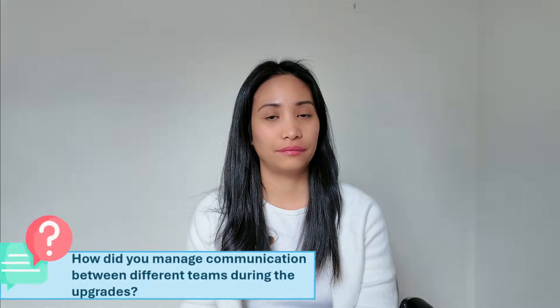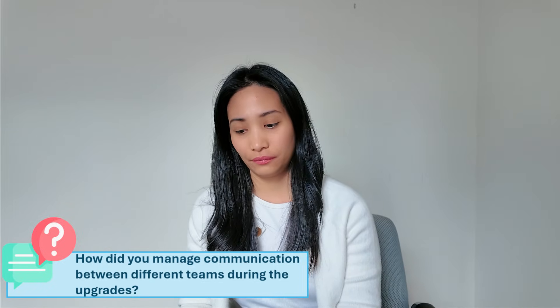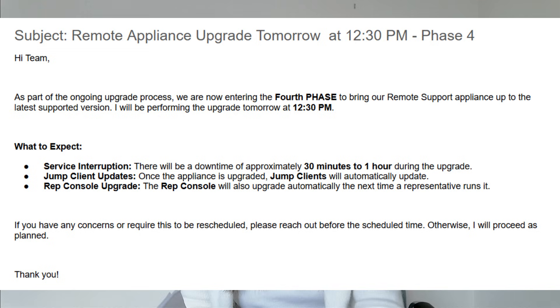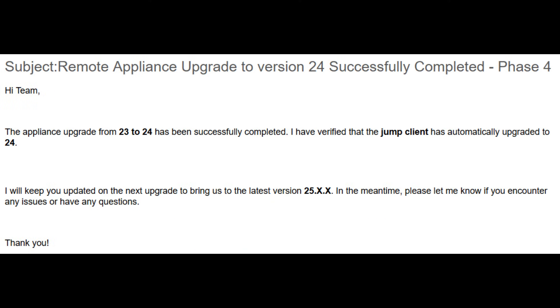For communication between teams during the upgrades, I made sure communication was the priority from the beginning. I let all teams know what the impact would be, how long the downtime is, and what systems would be affected. After the upgrade, I sent an email on how it went — whether it was successful or if I encountered any issues — so everyone knew where things stood.